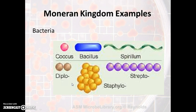Examples of the monera kingdom are, of course, bacteria. There are many different kinds of bacteria, and they're usually named according to their shape. For example, streptococcus — when you have strep throat, it's bacteria that are round and arranged in a straight line.